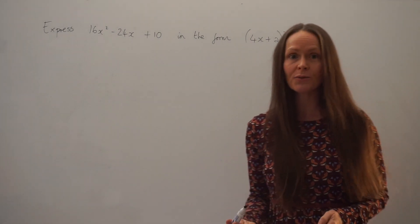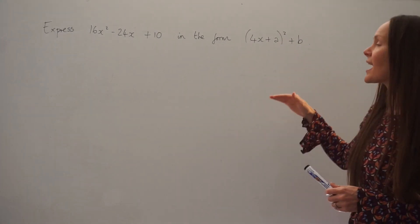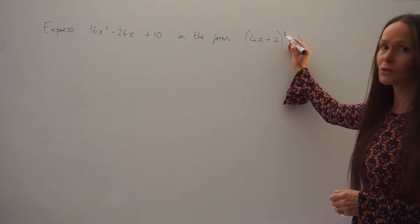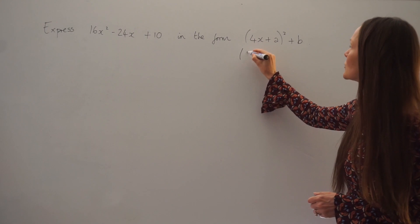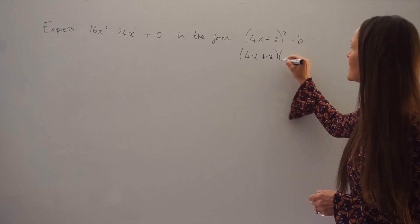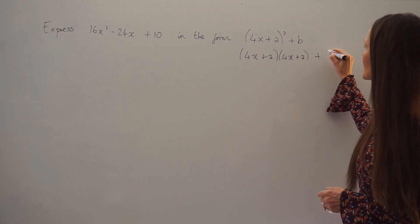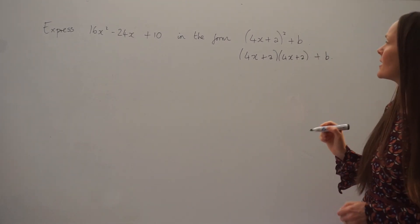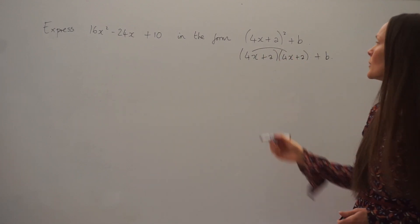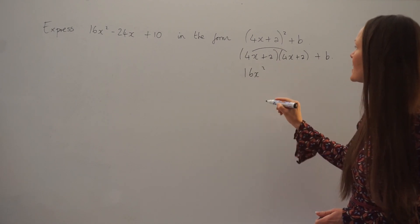So what you need to do first is take the form that they want you to write it in and expand those brackets. Remember, squared means multiplied by itself, so you need to multiply that bracket by itself. I'm also going to write down the plus b because I don't want to forget about that letter later on.